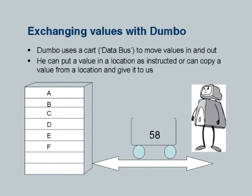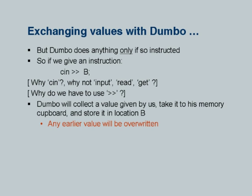Then we say how we exchange values with Dumbo, namely the input operation. Dumbo uses a cart — which technically may be called a data bus — to move values in and out. He can put a value in a location as instructed or can copy a value from a location and give it to us. So this is the sort of cart in which Dumbo is carting a value, going from us to the cupboard or from the cupboard to us, whichever.